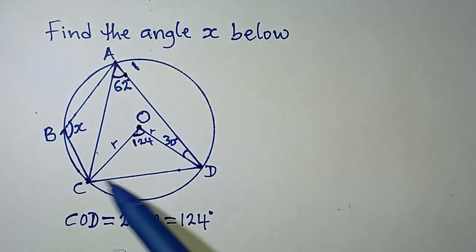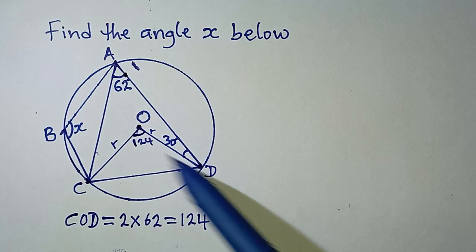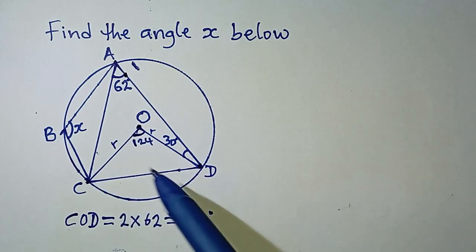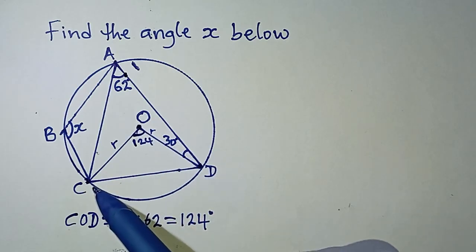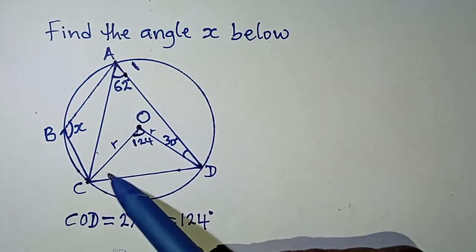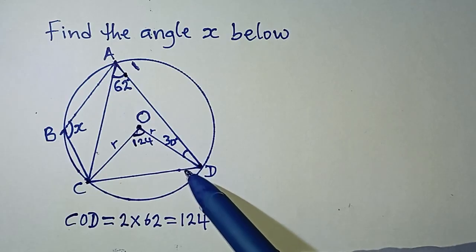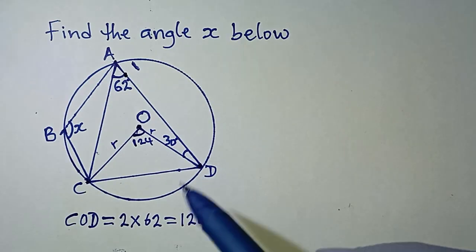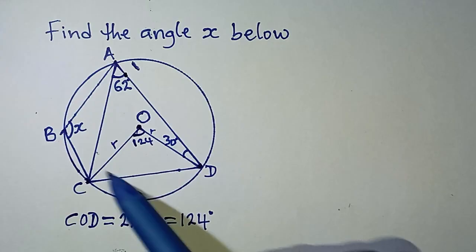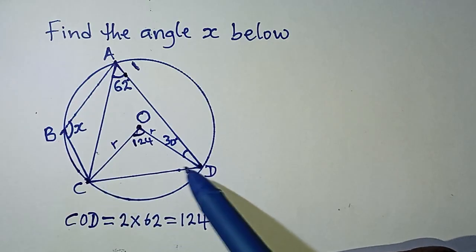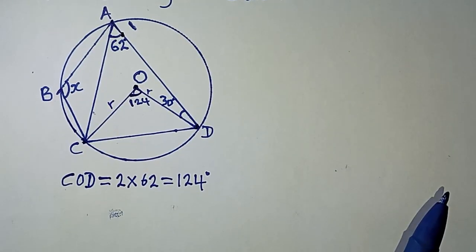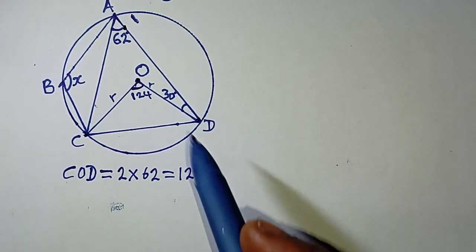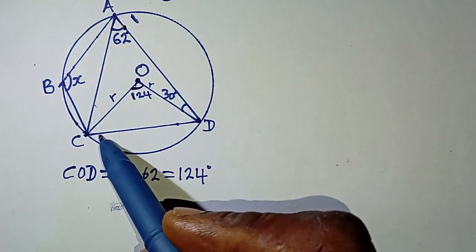Since these two sides OC and OD are equal radii, triangle ODC is an isosceles triangle. The base angles of an isosceles triangle are equal — don't forget that theorem — so we can obtain the value of the two base angles.